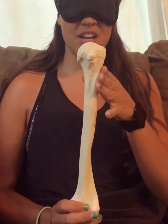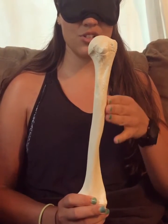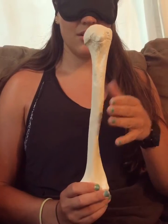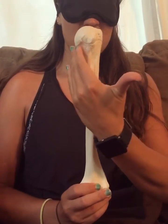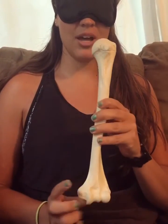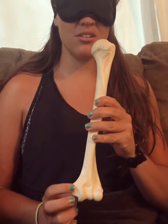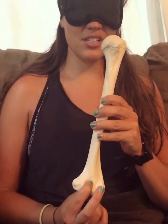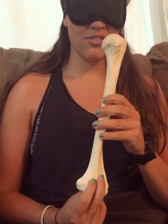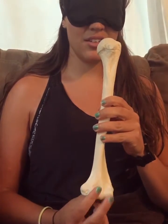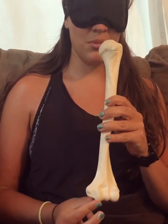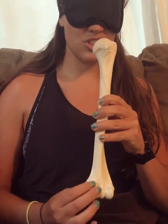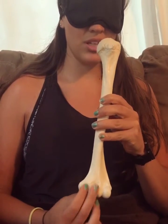Coming down laterally, this is the deltoid tuberosity. The head is medial. Medial epicondyle, coronoid fossa, radial fossa. On the medial side is the trochlea, which is shaped like a pulley.